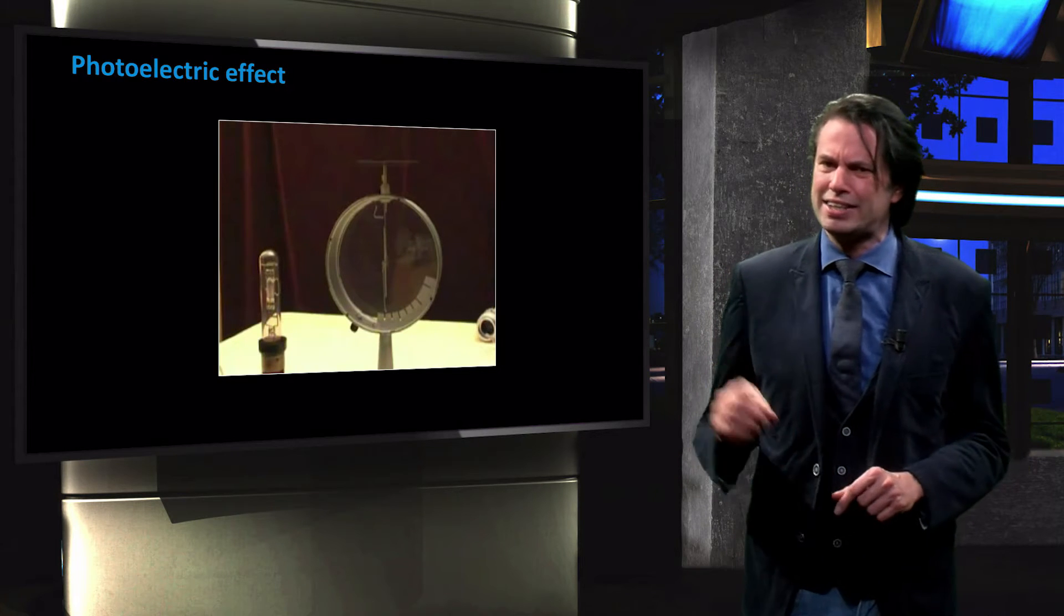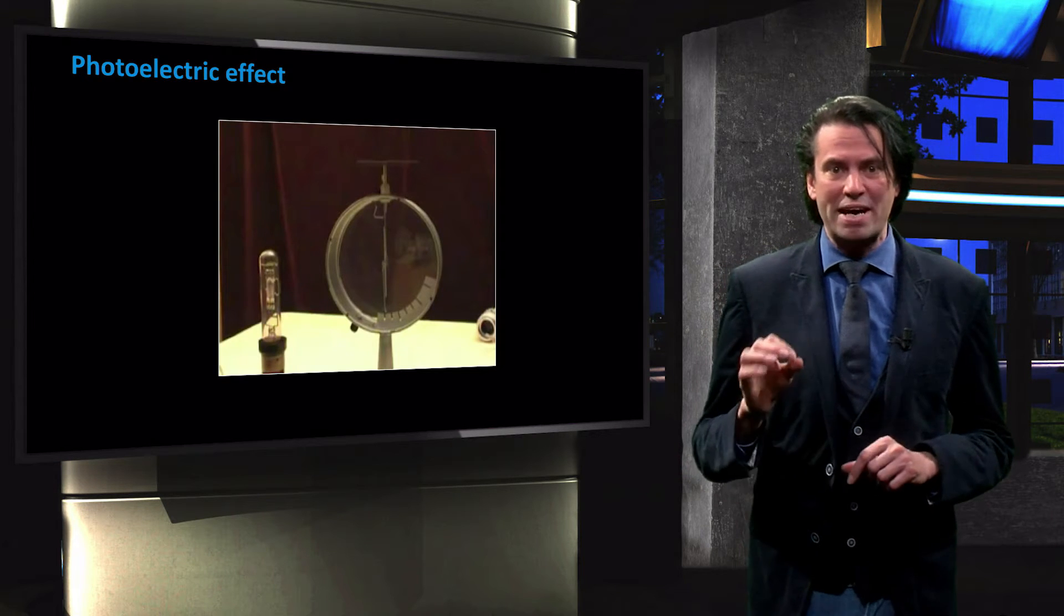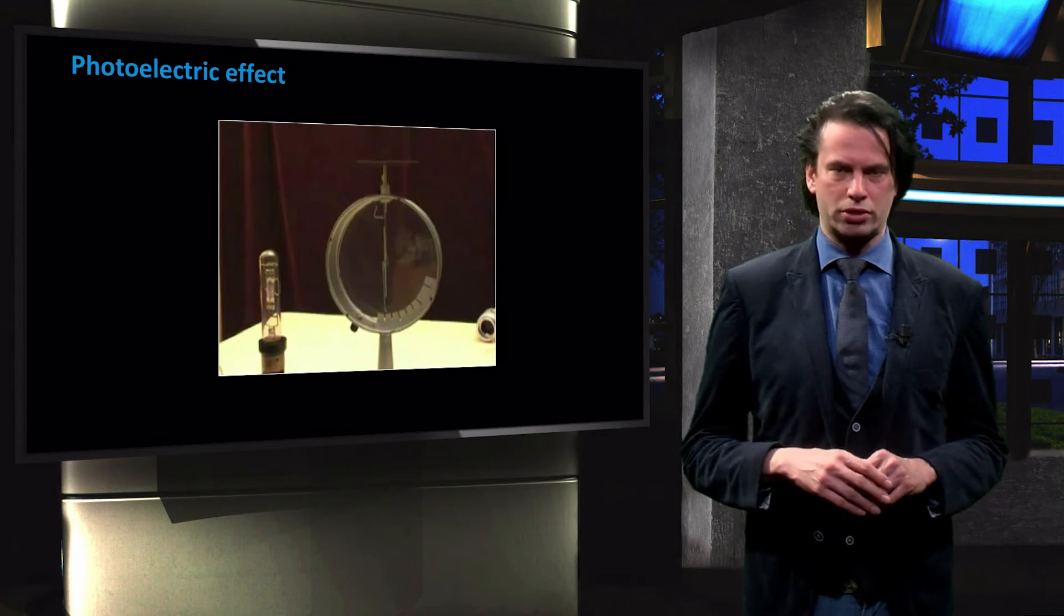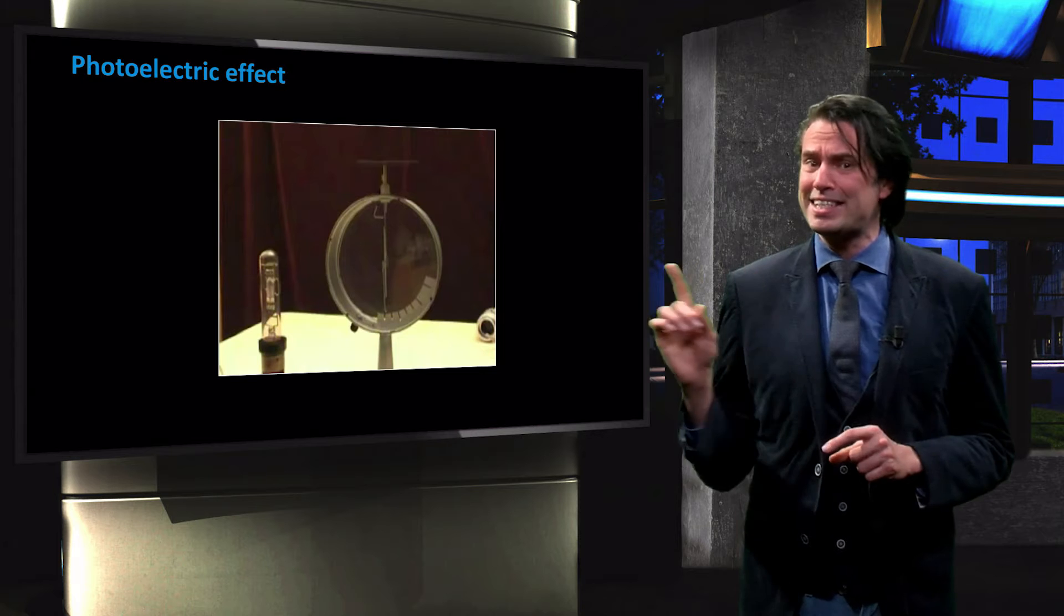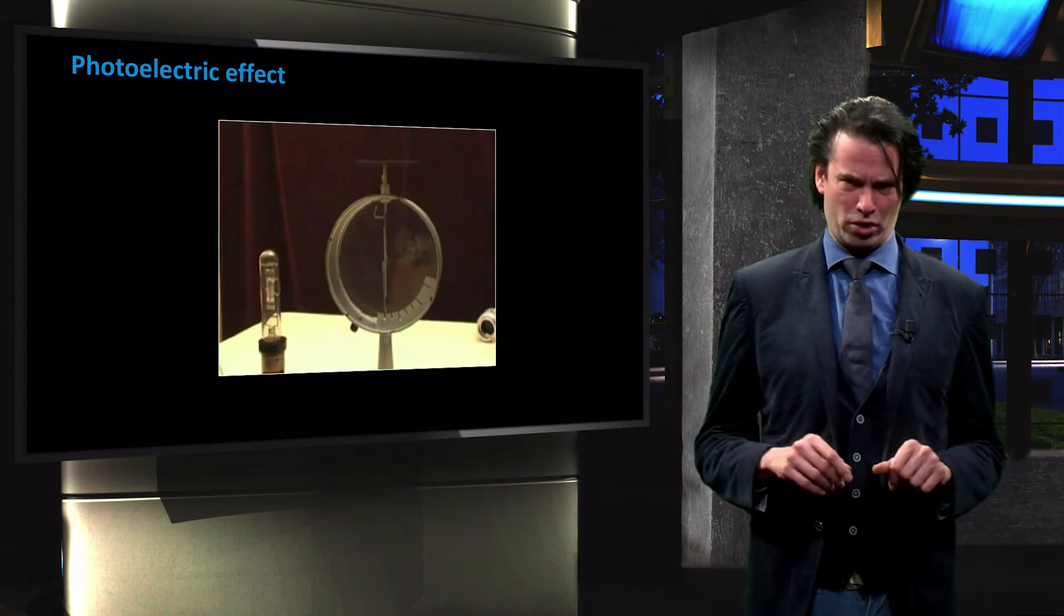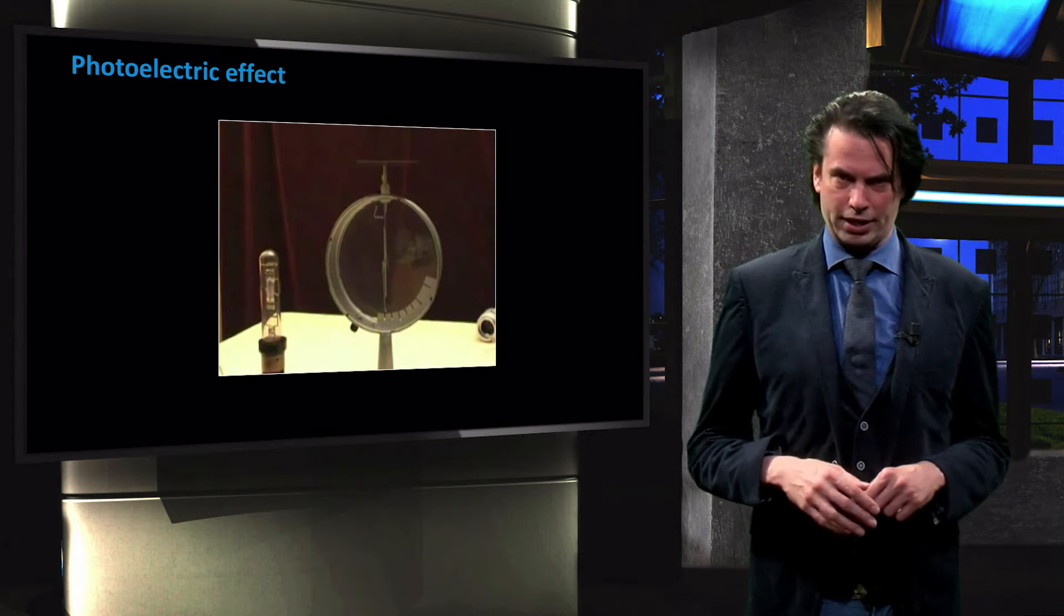Experiments show however that the incident light only excites electrons from the metal when the wavelength of the light is below a certain threshold. This means that if you repeat this experiment with reddish light, this effect does not occur. It only occurs for bluish and ultraviolet light.